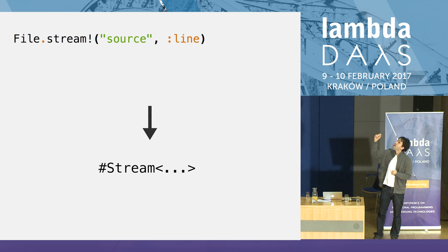GenStage is a new behavior — the same way we have GenServer, now we have GenStage — that allows you to model how your processes exchange data between different stages transparently and with back pressure. Here's a simple pipeline: a producer sends events to a producer-consumer, which may send to another, and then it ends at the consumer. All you need to do is tell GenStage how the stages connect, and it takes care of sending data between them.